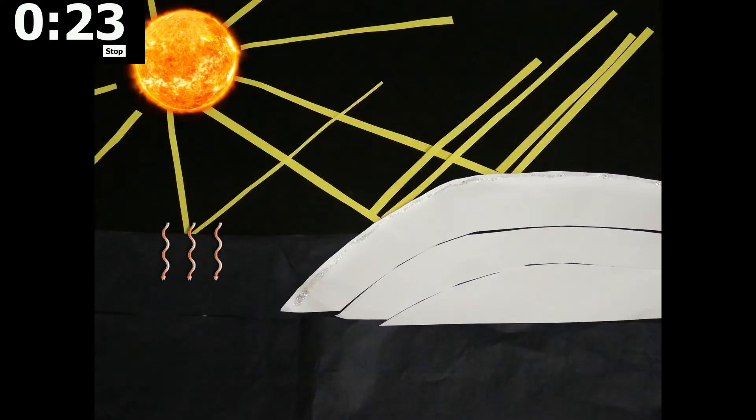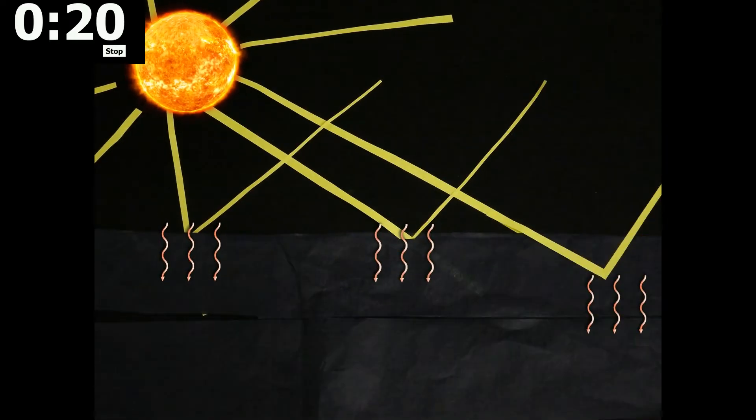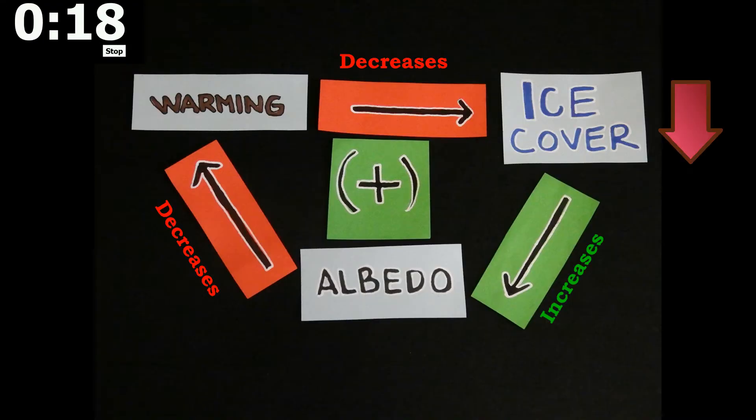But because ice cover decreases, less light is reflected back into space, causing further warming. This is a positive feedback.